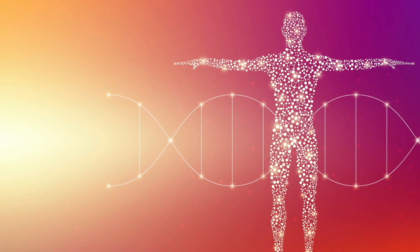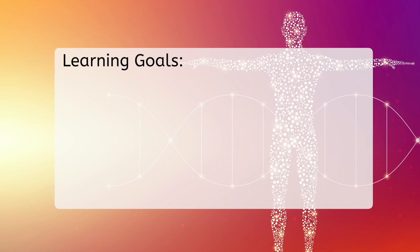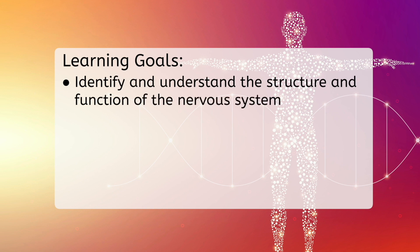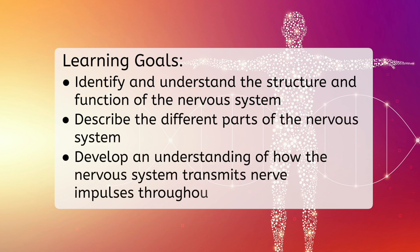But before we get started, let's look at our goals for this lesson. By the end, you'll be able to identify and understand the structure and function of the nervous system, describe the different parts of the nervous system, and develop an understanding of how the nervous system transmits nerve impulses throughout the body.